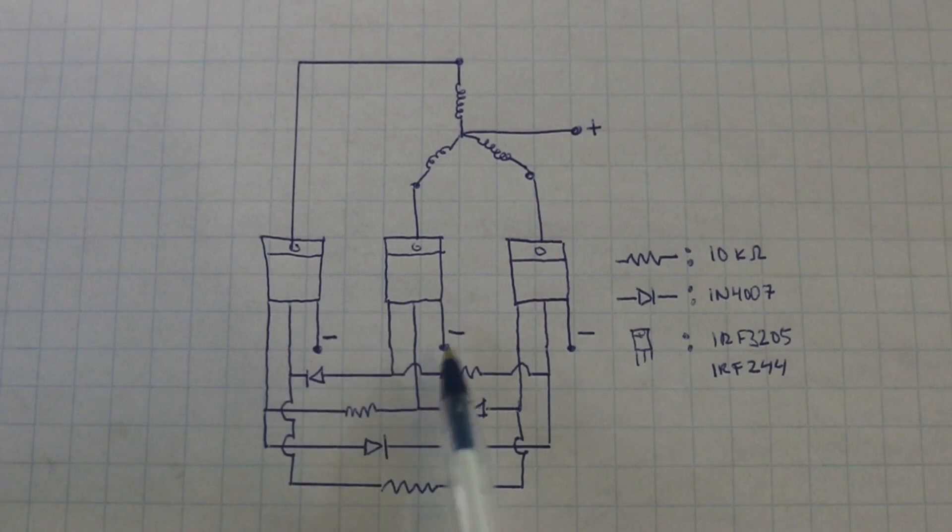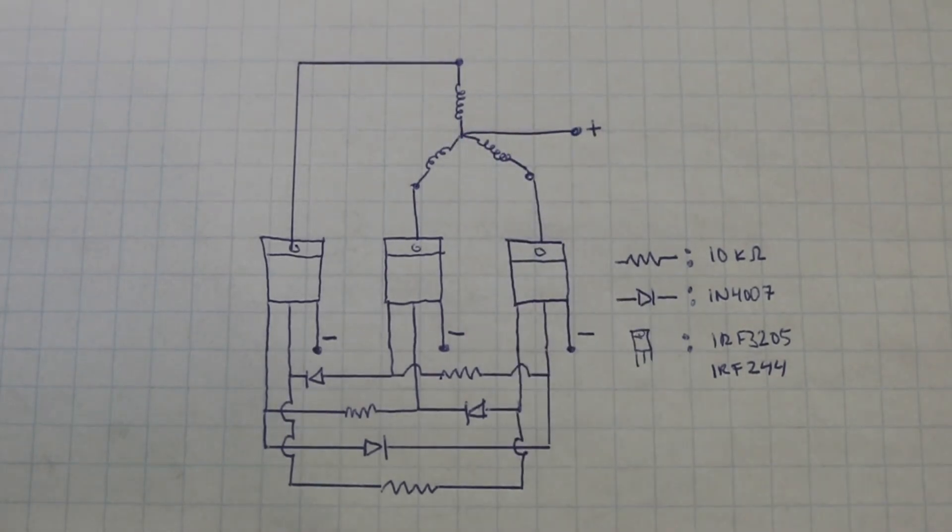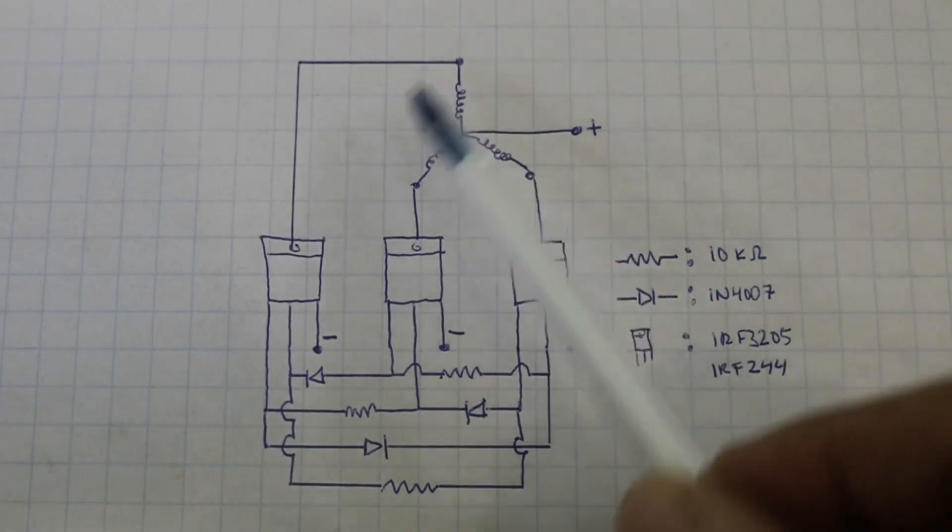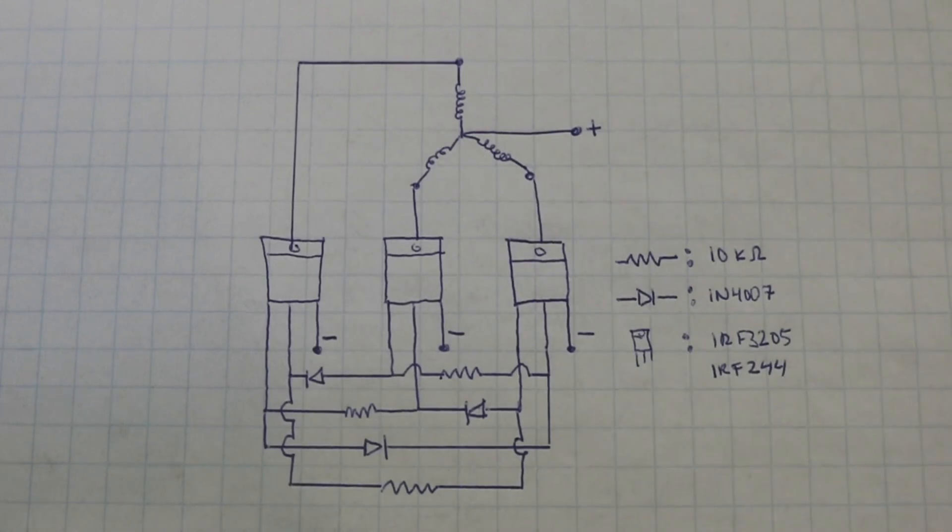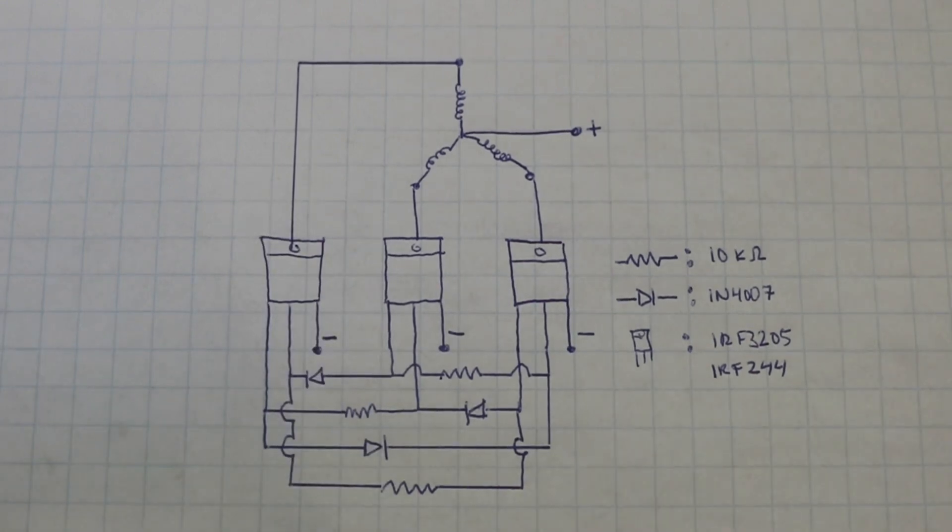These points, the sources of the MOSFETs marked with negative, are connected together and go to the negative of the power supply and the positive of your power supply goes to the center point of the coils that you must already have identified in your motor. And the 3 other terminals of the motor are connected to the MOSFETs. You can connect them to the region of the heatsink of your MOSFETs. So, let's now see how I made the driver and then test it with a motor.